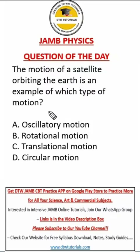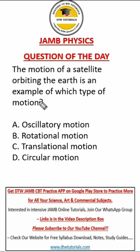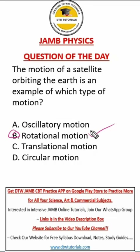Let's look at this question. This is another easy question, but very fast to fail. It says the motion of a satellite orbiting the Earth is an example of which type of motion? Most people will just quickly go to rotational and tick it. But I tell you, it is absolutely wrong. The right answer here is D — it's circular motion.